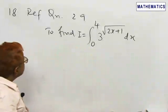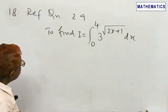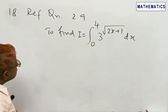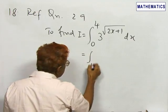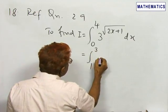The next problem for discussion is question number 29 of the worksheet. We need to evaluate the integral from 0 to 4 of 3 to the power of 2x plus 1 dx, and this is the same as the integral from 1 to 3.